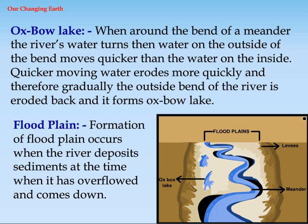Floodplain: Formation of a floodplain occurs when the river deposits sediments at the time when it has overflowed and comes down.